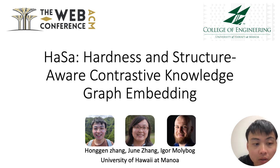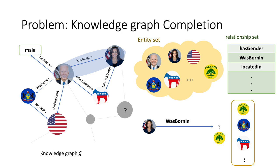We propose a new knowledge graph embedding method, HaSa, to generate the negative triples accounting for false negative triples. We try to solve the classic knowledge graph completion problem with better performance.